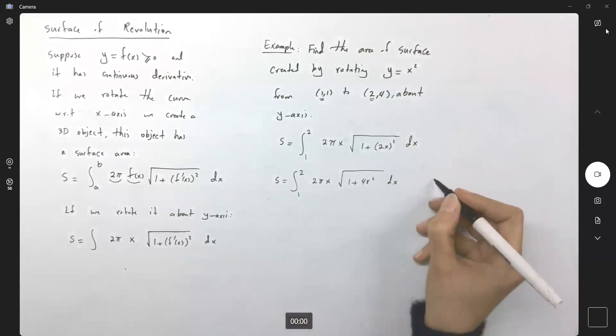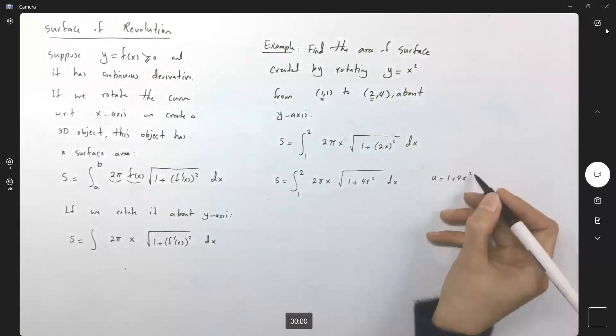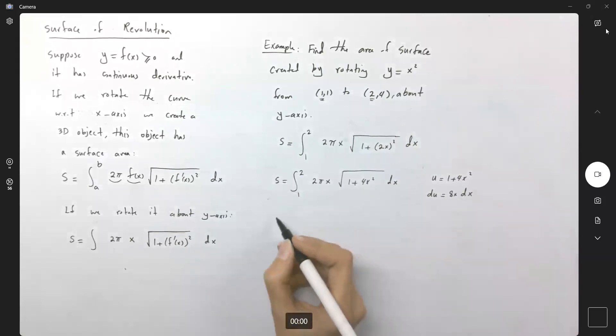Now we can easily apply u-substitution method. u is 1 plus 4x squared, and du is 8x dx.